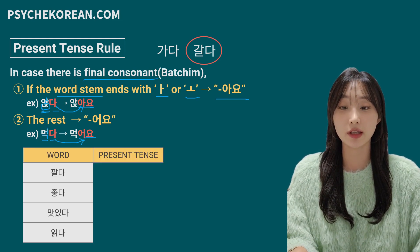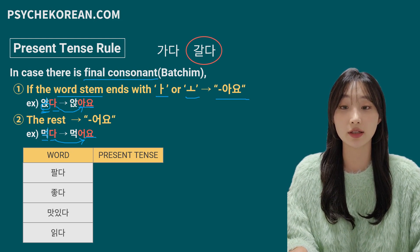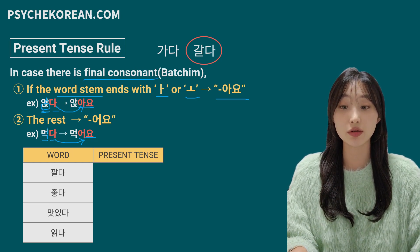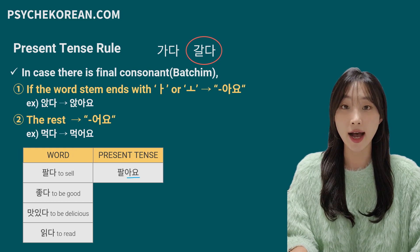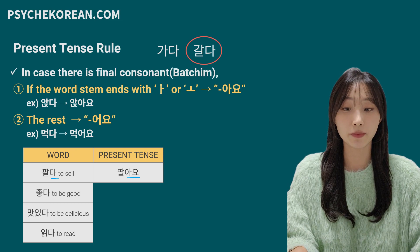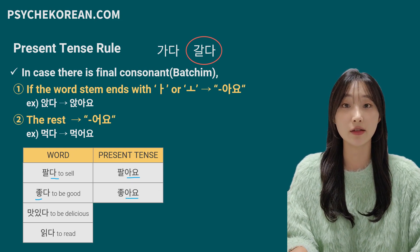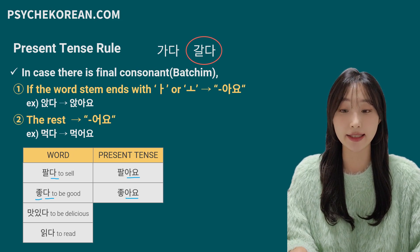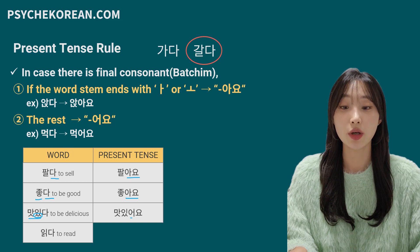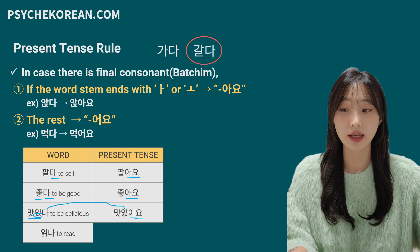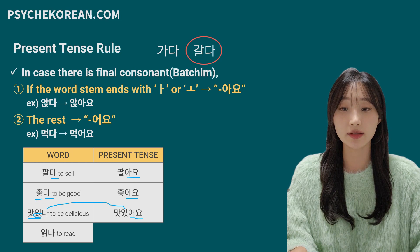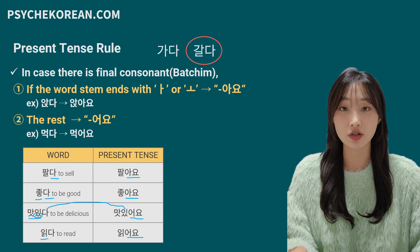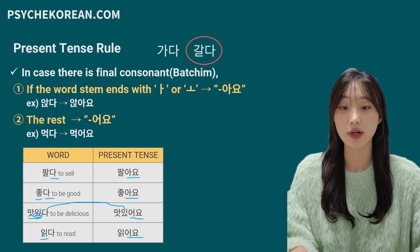Let's practice with more examples. These four words all have a final consonant, so they follow these rules. First: 팔다, meaning 'to sell' — final consonant, vowel is 아, so it follows the first rule: 팔아요. Next: 좋다, 'to be good' — final consonant, vowel is 오, first case: 좋아요. Then: 맛있다 — final consonant, not 아 or 오, second case: 맛있어요. And: 읽다 — final consonant, not 아 or 오, so 읽어요.